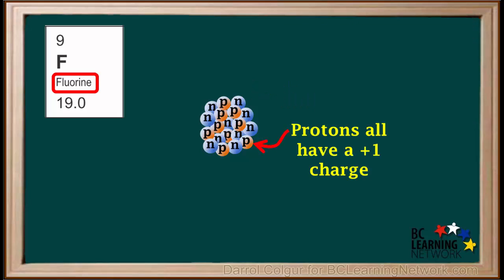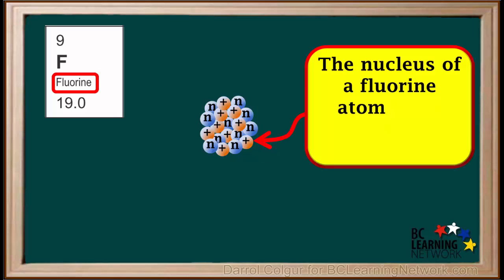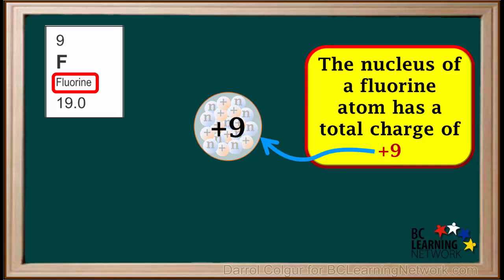Because protons all have a positive one charge, we'll replace the p's with positive charges in this diagram. So the nucleus of a fluorine atom has 9 positively charged protons. Therefore, it has a total charge of positive 9.